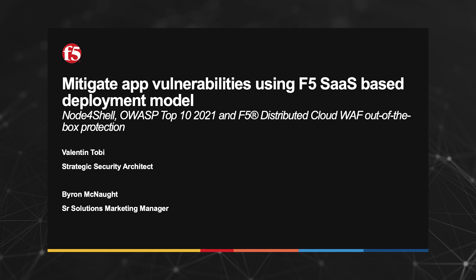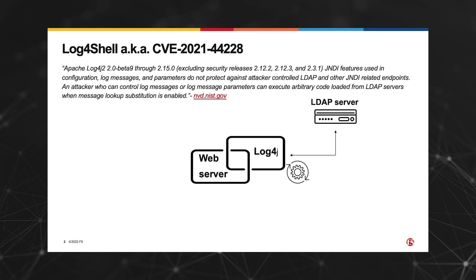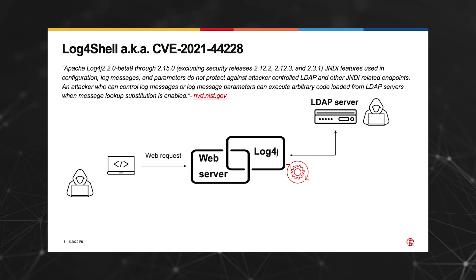First, let's see what is a Node4Shell attack. The underlying issue is that we have a vulnerable logging utility — Apache's widely used Log4J — that in some versions executes code downloaded from third-party LDAP servers without proper checks. To exploit this vulnerability, the attacker needs to control a rogue LDAP server and then submit a request to the vulnerable server, directing the Log4J logging utility to download and execute code from that rogue LDAP server.